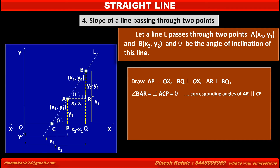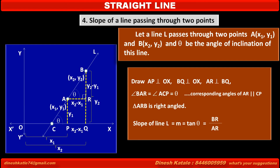Since AR is parallel to the x-axis, angle BAR is also equal to theta, as a corresponding angle with angle C. Therefore triangle ARB is right-angled at point R. Therefore the slope of line L is equal to m equals tan(theta), as theta is the angle of inclination. And as we know, tan(theta) is equal to opposite side upon adjacent side, which is BR upon AR.